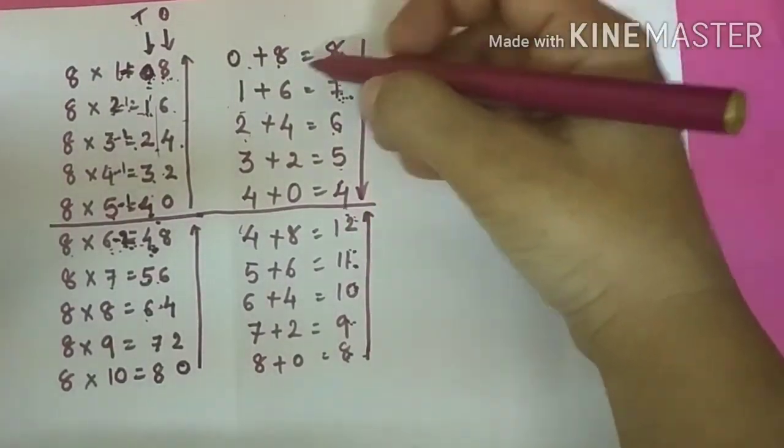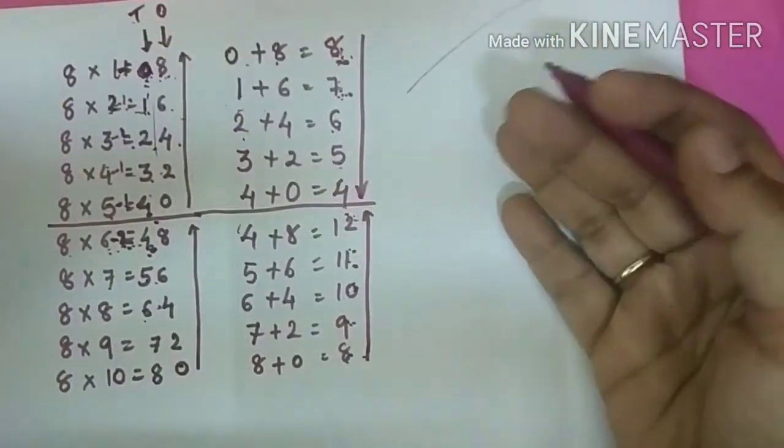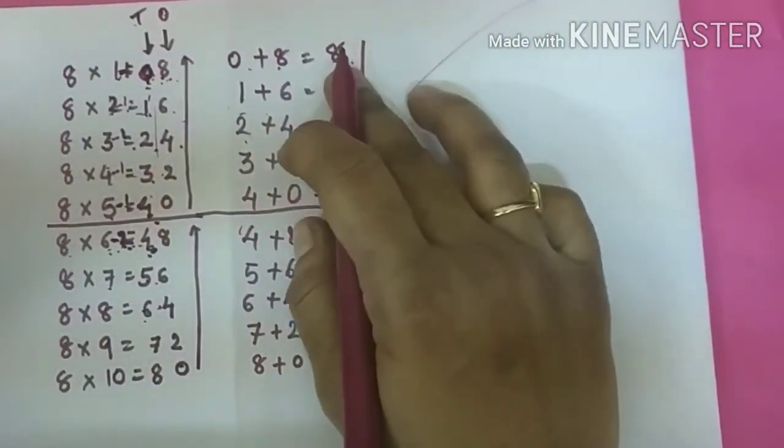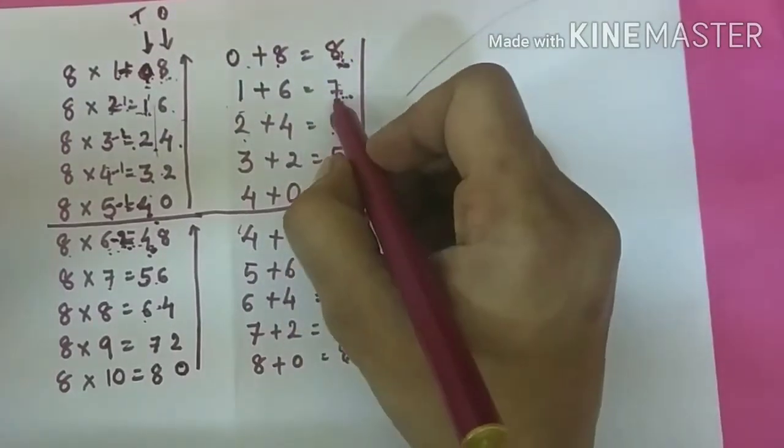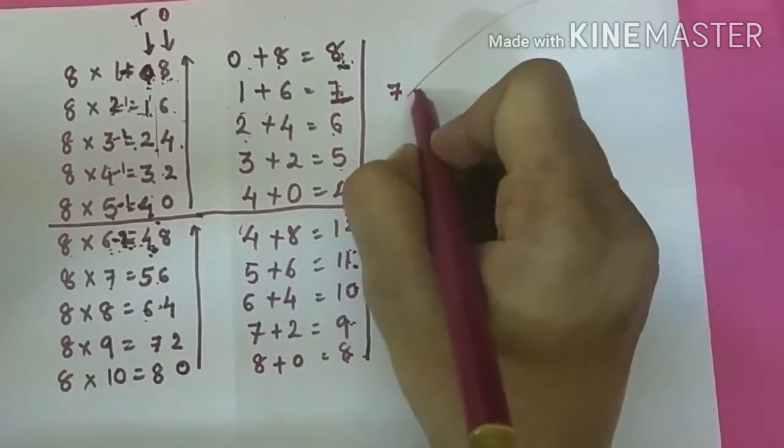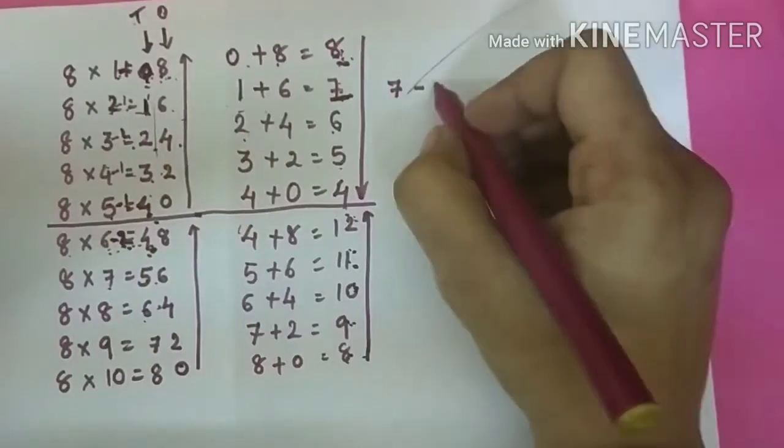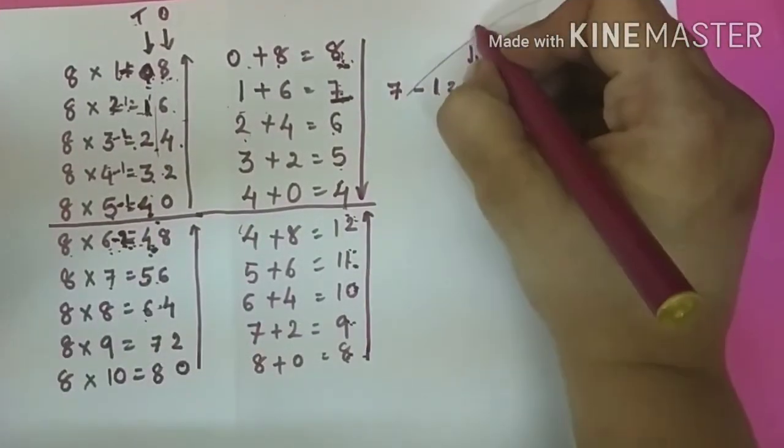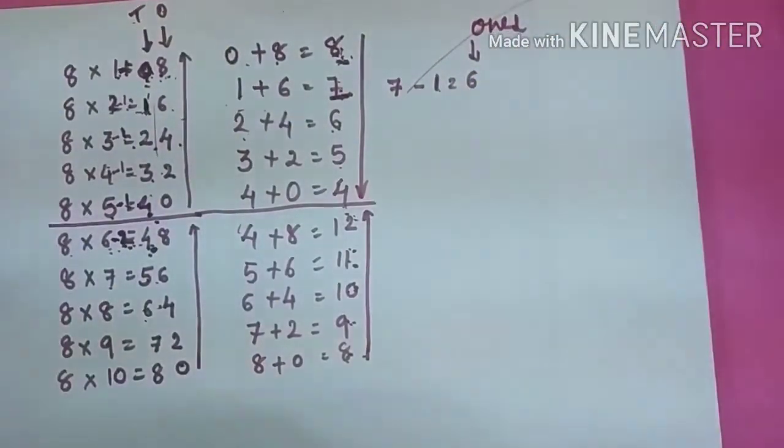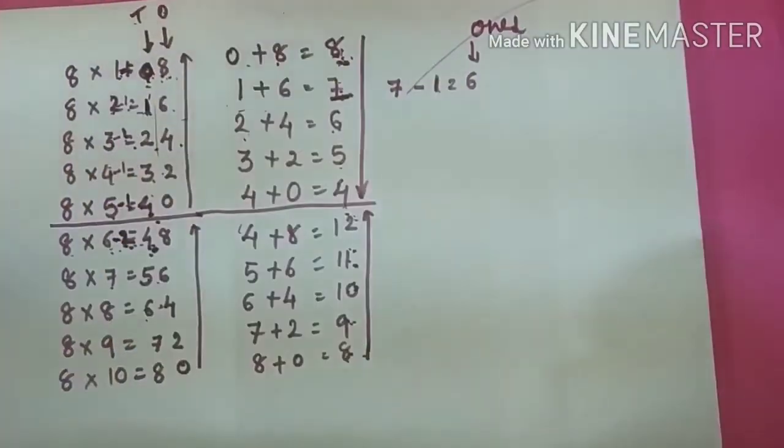So friends, you can get your ones place value by just subtracting your tens place value from this number. For example, here total is 7. So 7 minus 1, tens place value is 1. So it is equal to 6. So 6 will come on your ones place, right? Like this way, you will get your ones place value.